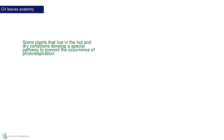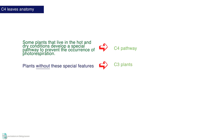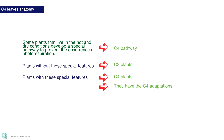Some plants that live in hot and dry conditions develop a special pathway to prevent the occurrence of photorespiration. This pathway is called the C4 pathway. Plants without these special features are known as C3 plants, while those with this special adaptation are called C4 plants.